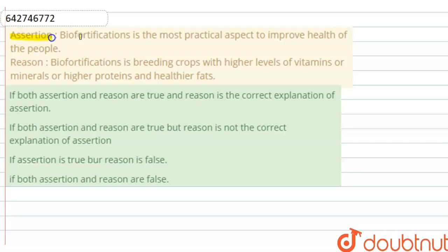The question says that Assertion: Biofortification is most practical aspect to improve health of the people. Reason: Biofortification is breeding crops with higher level of vitamins or minerals or higher protein and healthier fats.